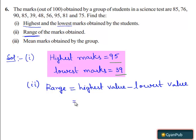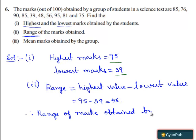Therefore, 95 minus 39 which is equal to 56. Therefore, the range of marks obtained by the students is equal to 56.